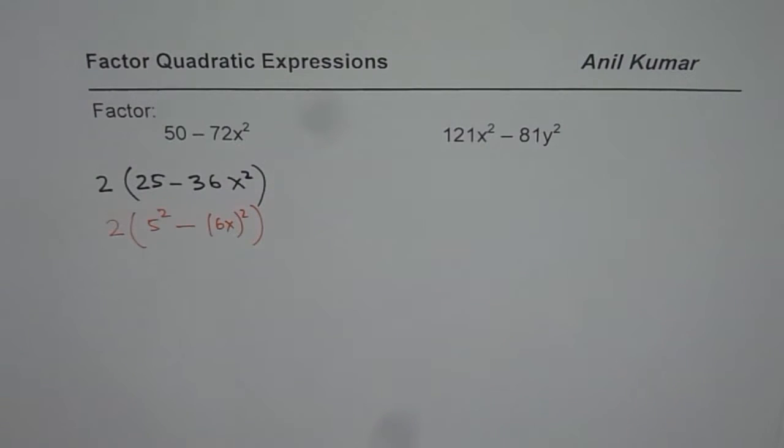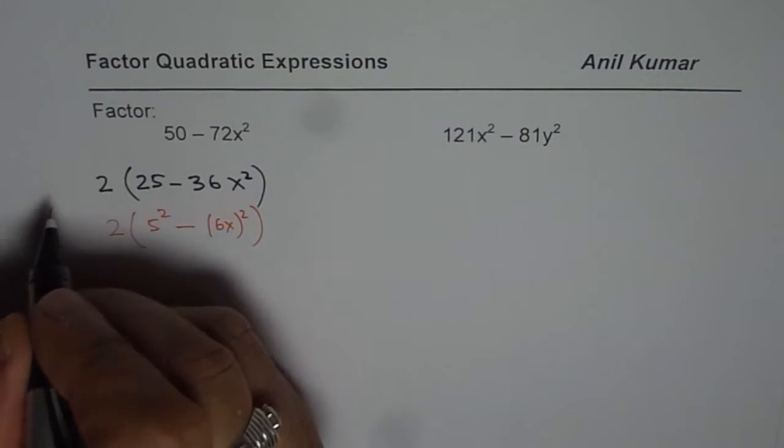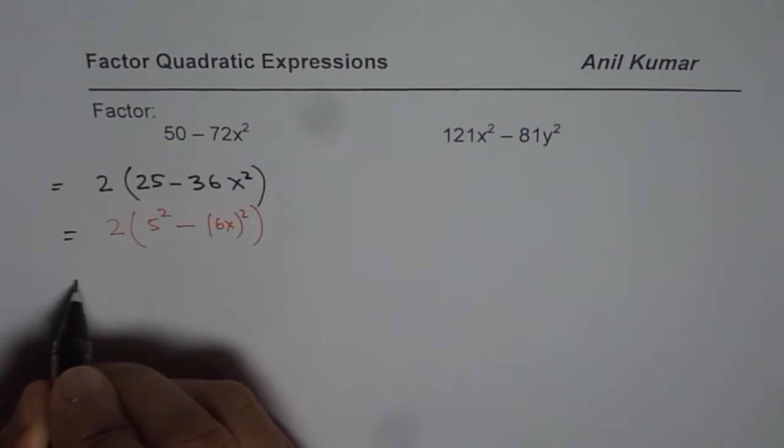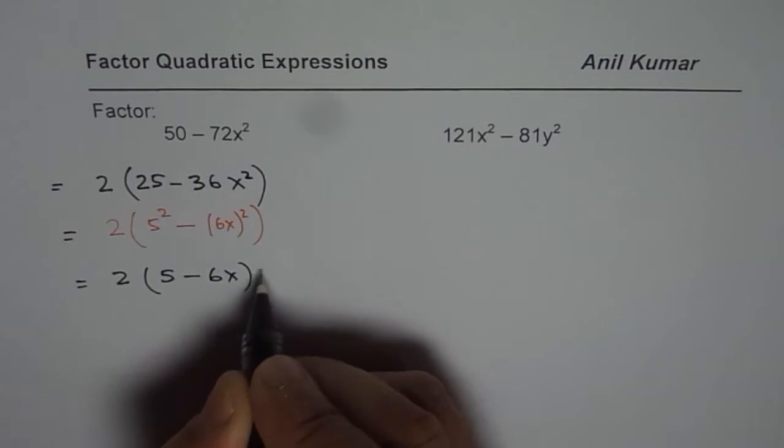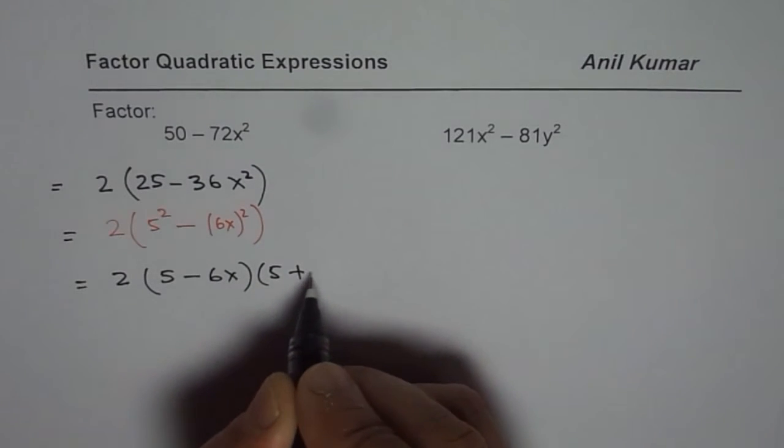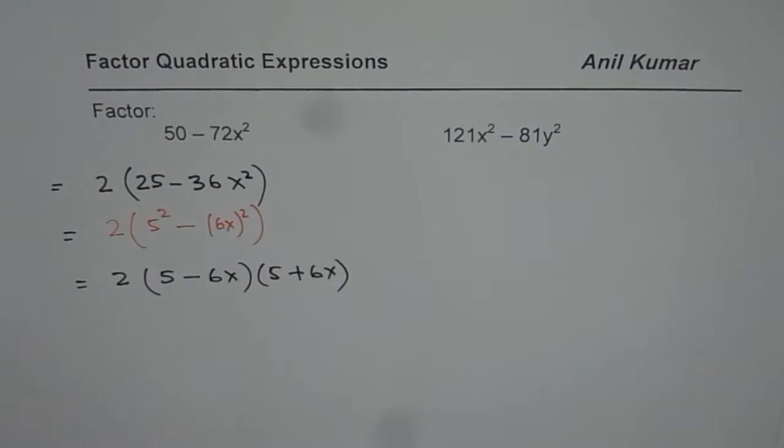You could see this as 25 as 5 squared and this is 6x whole squared. Now it is difference of squares which can be factored. So I could write these expressions as 2 times 5 minus 6x times 5 plus 6x. So that is how we can factor the difference of squares given here.